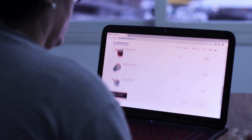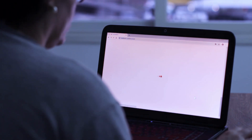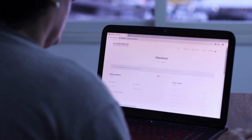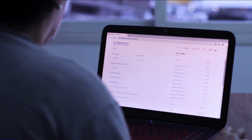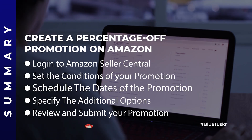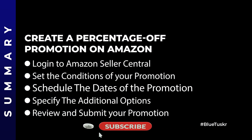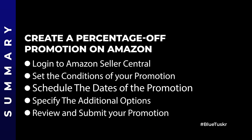So there you have it — that's how you create a percentage off promotion in Amazon Seller Central. Till our next tutorial. If you like this content, don't forget to like this video, click the subscribe button, and ring that notification bell so you will get notified on our next video.